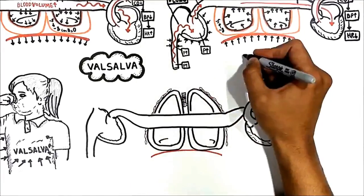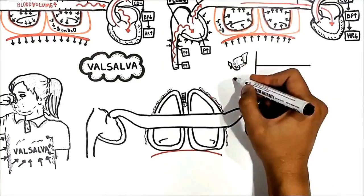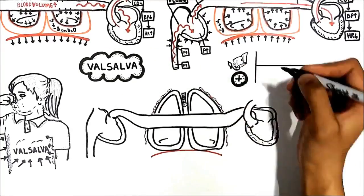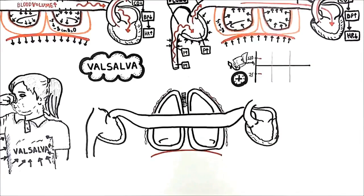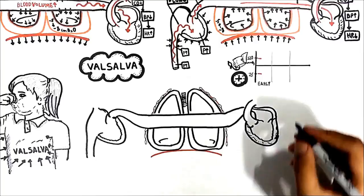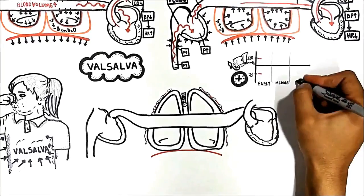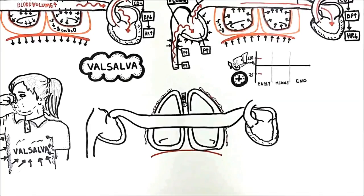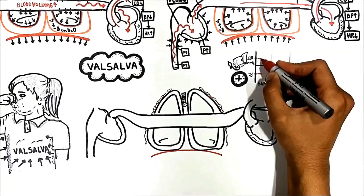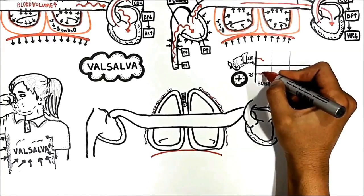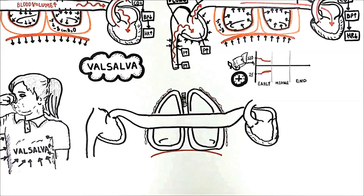I will draw a graph where at the top we have blood pressure and below we have heart rate shown by these lines. We will see the Valsalva maneuver in three periods of time: early Valsalva when we take a deep breath, middle Valsalva, and end Valsalva. As discussed earlier, when we take a deep breath, blood pressure decreases for a while but heart rate increases reflexively. This is early Valsalva — we are not compressing the lungs yet.